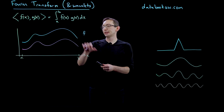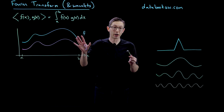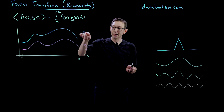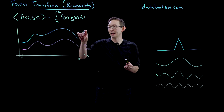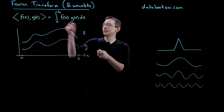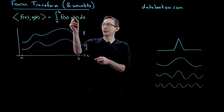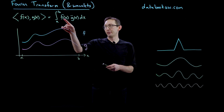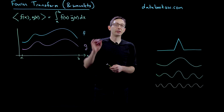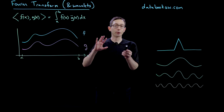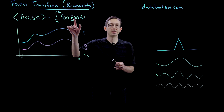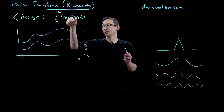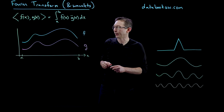Now if this was a complex-valued function — like e to the i omega x or something like that — then this inner product would have a complex conjugate over g. So this would be f(x) times the complex conjugate of g(x). But for real-valued functions f and g, the complex conjugate of g is just g, so you can forget about that for now.